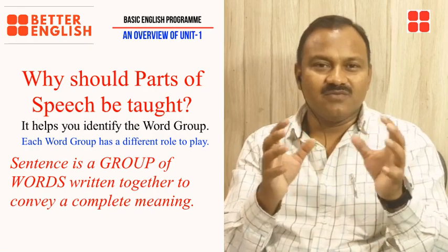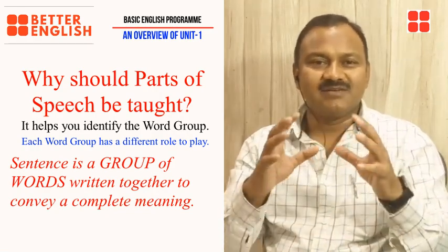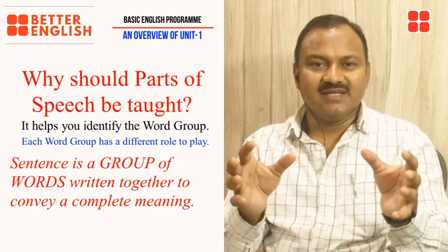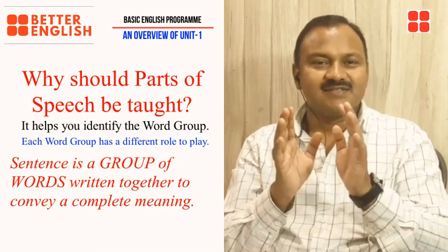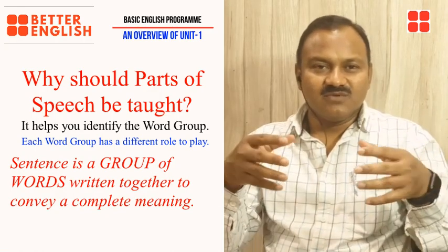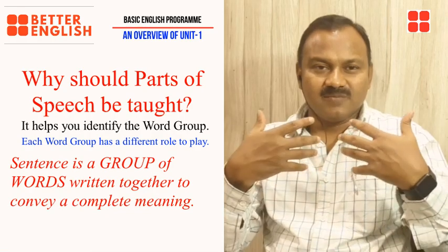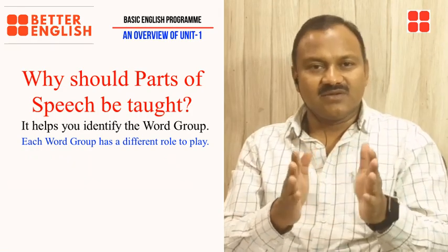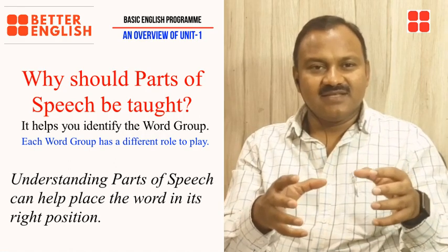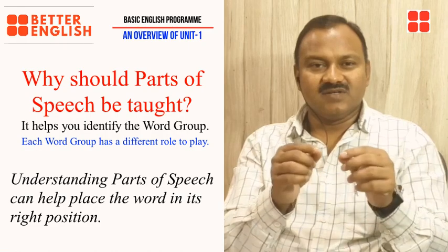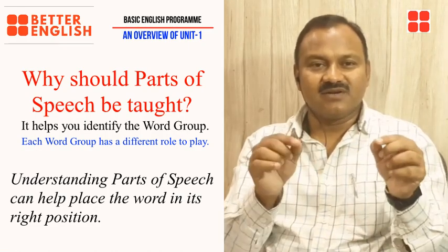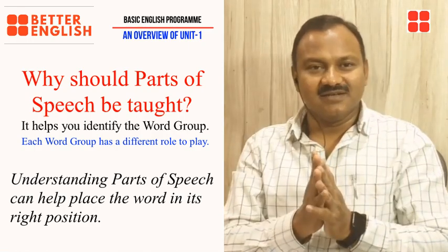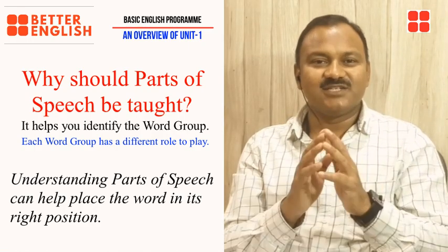A sentence is nothing but a group of words written together to convey a complete meaning. A sentence has many words, but you cannot just write random words in any order and call it a sentence. The words in a sentence must be arranged so that you can communicate what you want to say and make others understand. When you understand parts of speech, you will know which word should be positioned in which part of the sentence — and in this way you will be able to write and speak correct English.